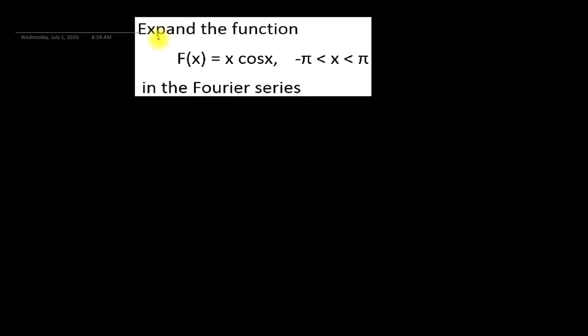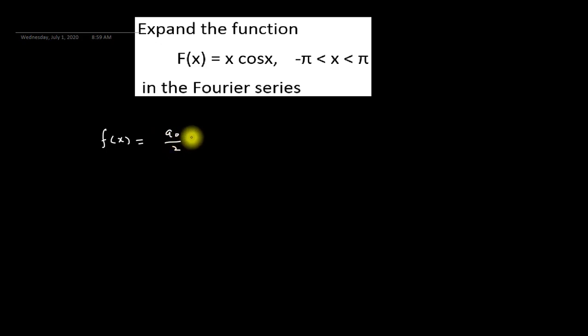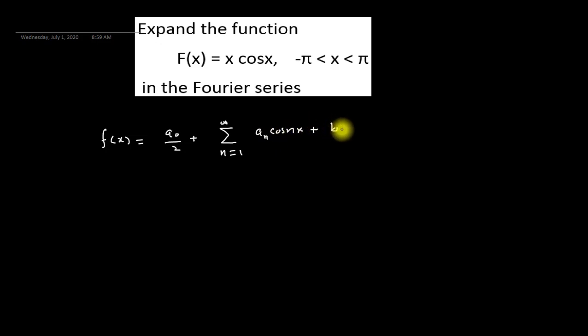Assalamualaikum friends, today we will solve an example related to Fourier series, which says to expand the function f(x) = x·cos(x) on the interval from minus pi to pi in the Fourier series. We know that the equation of Fourier series is f(x) = a₀/2 plus summation from n=1 to infinity of aₙ·cos(nx) plus bₙ·sin(nx).